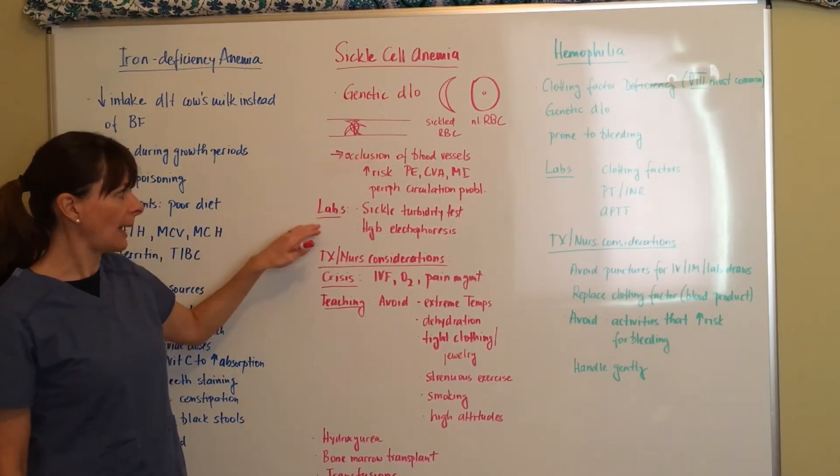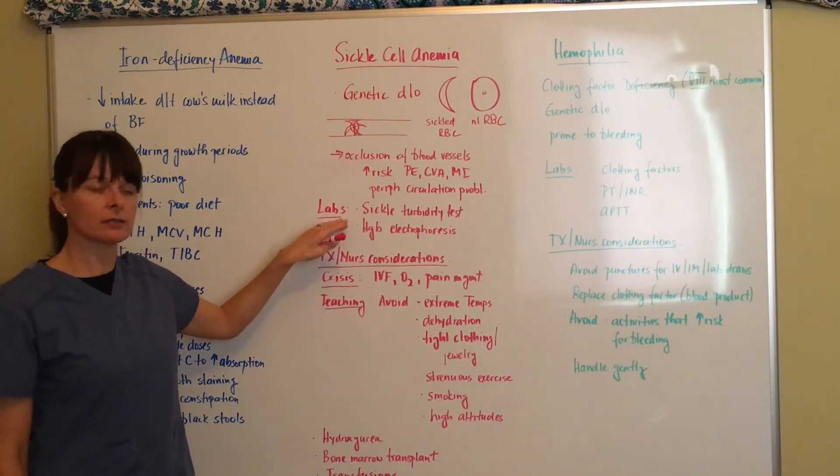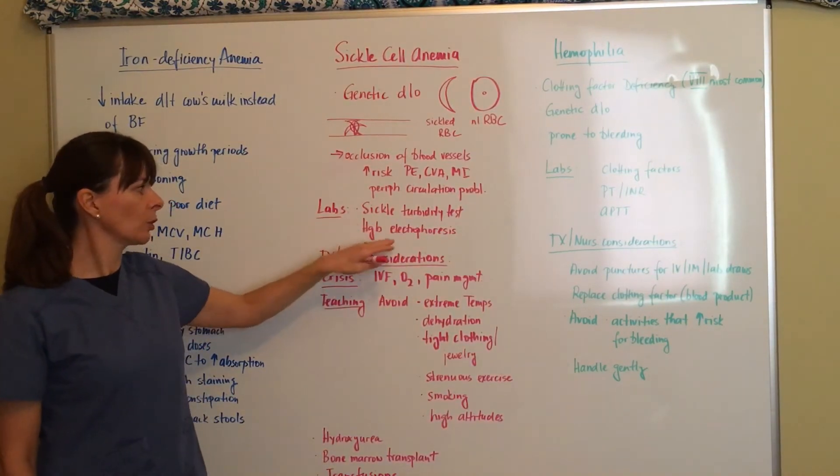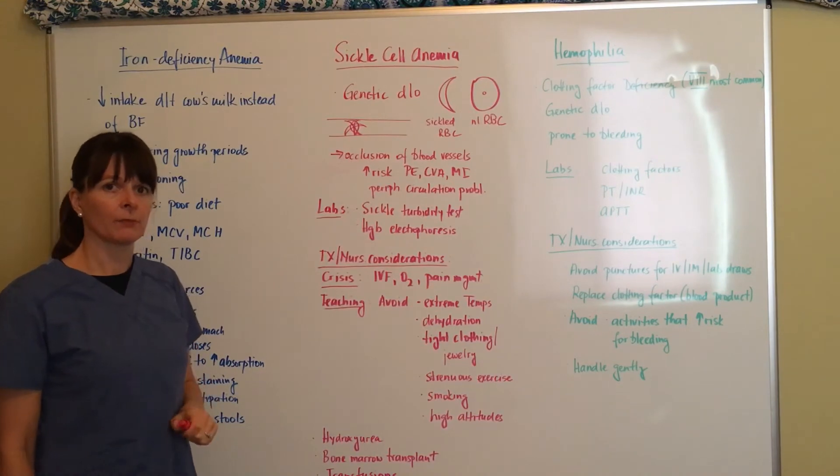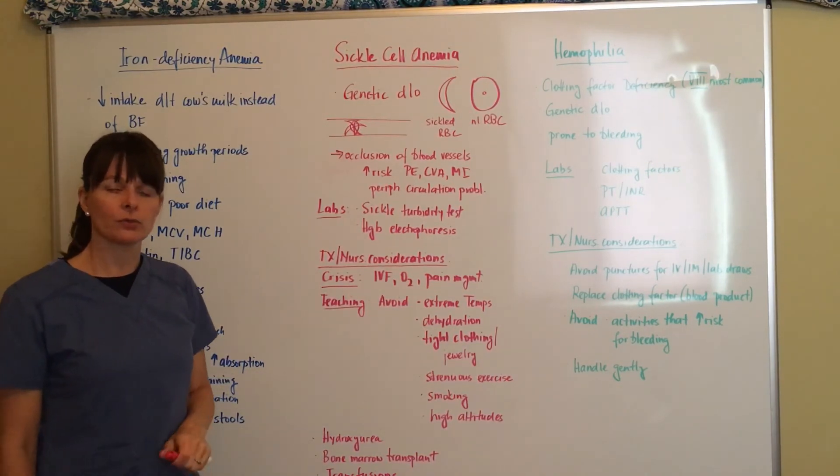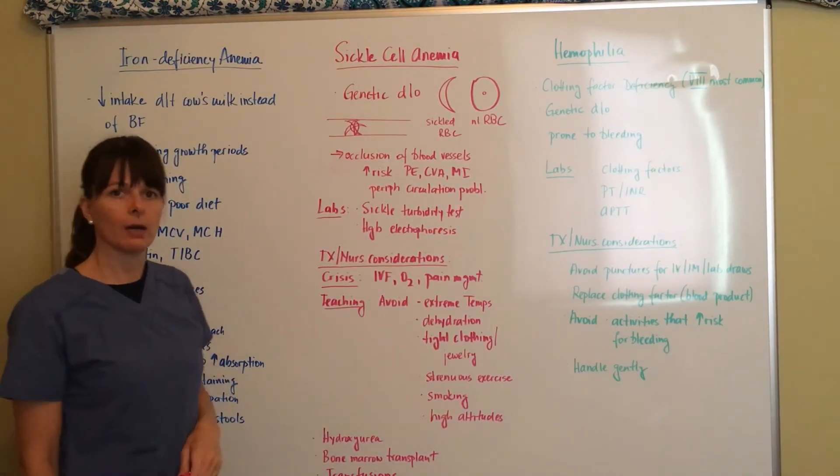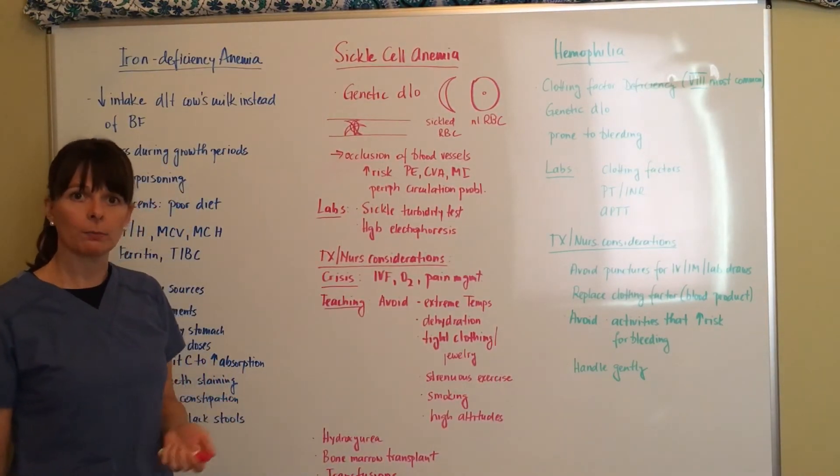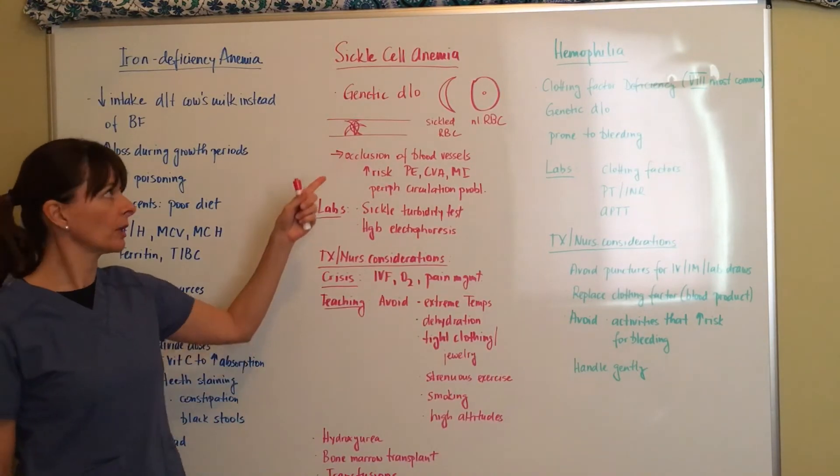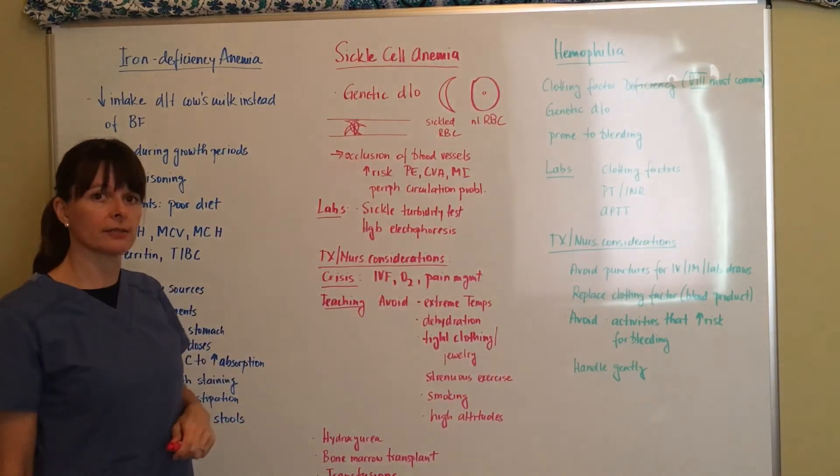As for lab tests, there's a special test called the sickle turbidity test and hemoglobin electrophoresis. Sickle cell disease is typically tested for in the very early postnatal period so we can find out if this child is at risk.